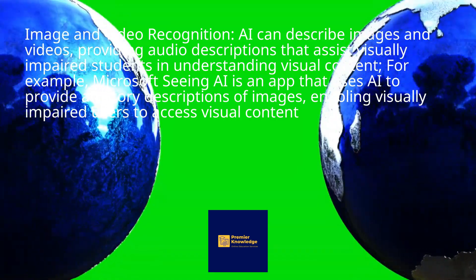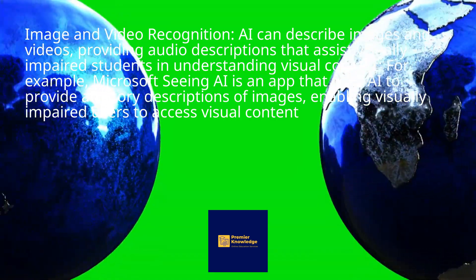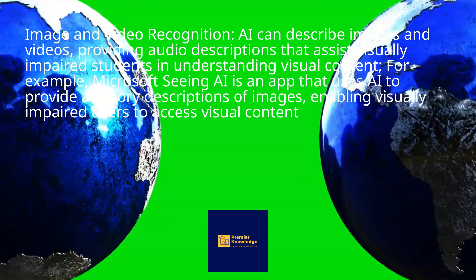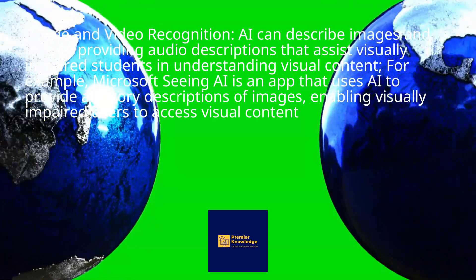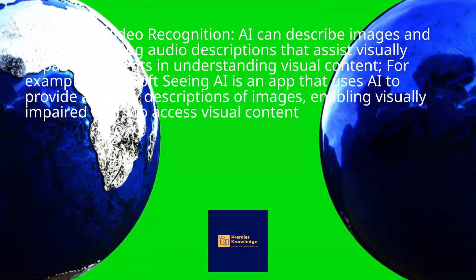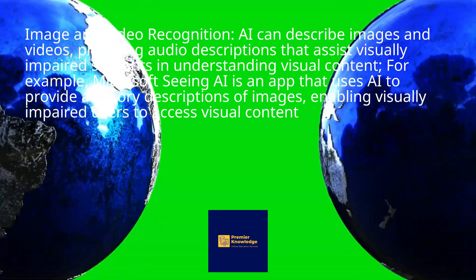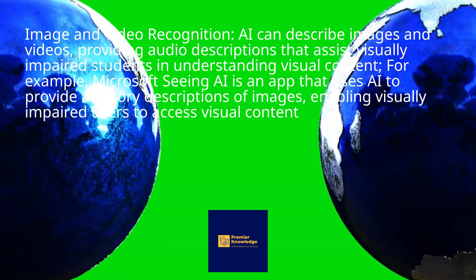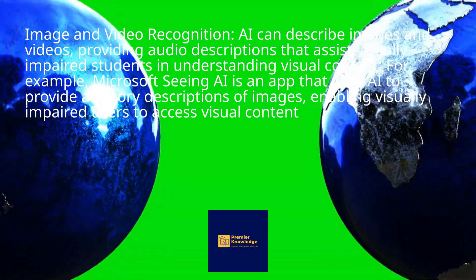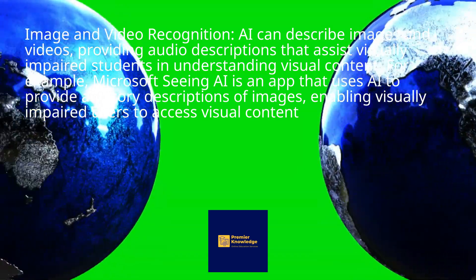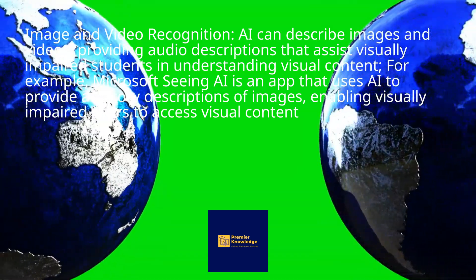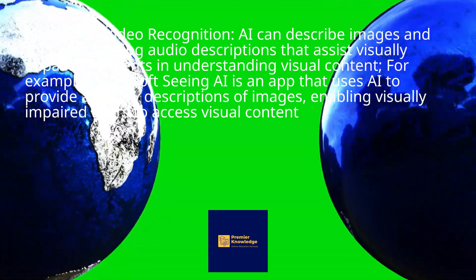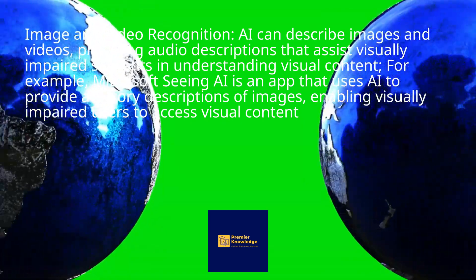Image and video recognition: AI can describe images and videos, providing audio descriptions that assist visually impaired students in understanding visual content. For example, Microsoft Seeing AI is an app that uses AI to provide auditory descriptions of images, enabling visually impaired users to access visual content.